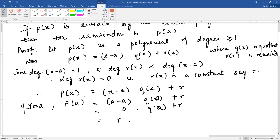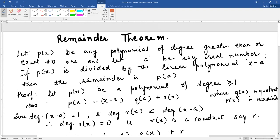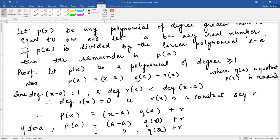That means if x is equal to a, then the remainder is p(a). This was what was to be proved in this theorem. If we divide by x minus a, then the remainder is p(a).